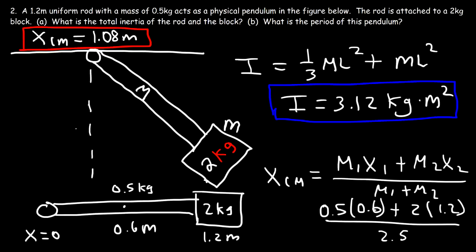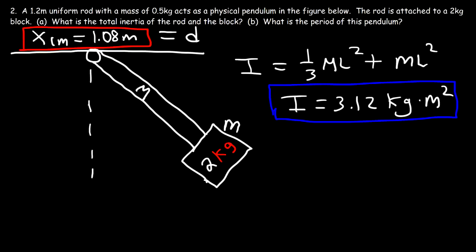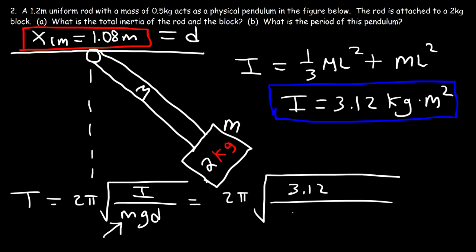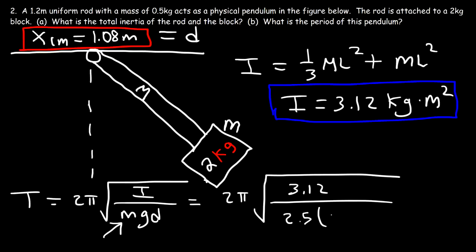Now that we have that, this value is d = 1.08 meters, and we can calculate the period. It's 2π times the square root of the inertia divided by mgd. This mass represents the total mass — the mass of the rod and the block. So it's 2π times the square root of 3.12 divided by the total mass of 2.5 kilograms, times g = 9.8, times d = 1.08.